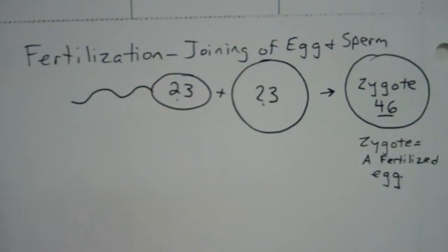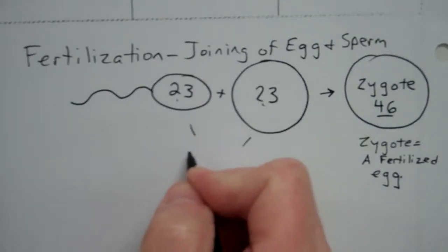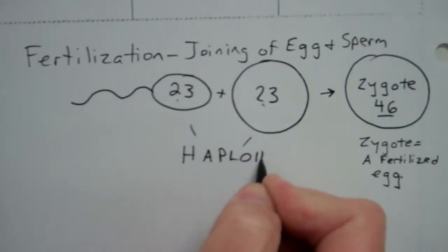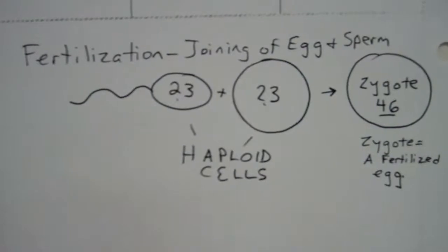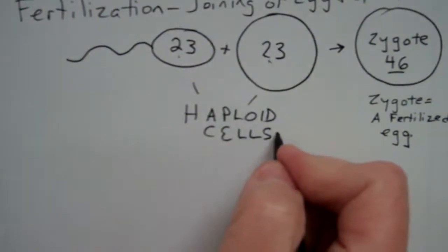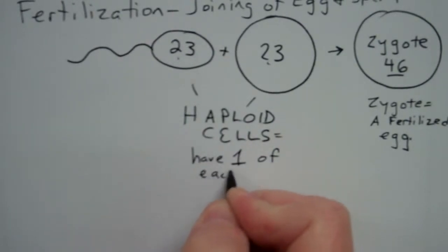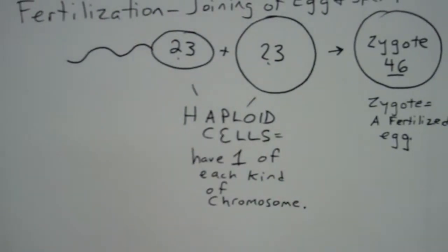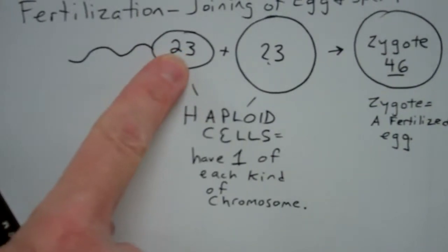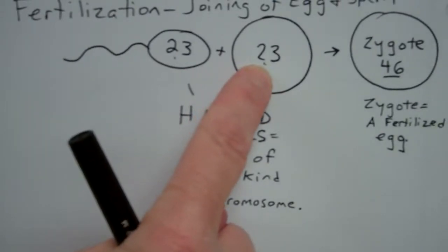So we call these cells that just have one of every kind of chromosome, we call these haploid cells. Now that's a new vocab word for us. So a haploid cell then, haploid cells have one of each kind of chromosome. In other words, the chromosomes in this sperm cell cannot be paired up. There are no pairs of chromosomes. There are no pairs of chromosomes in this egg cell.